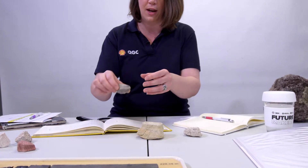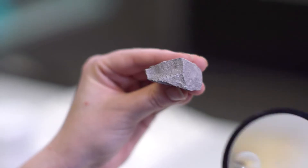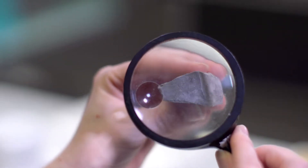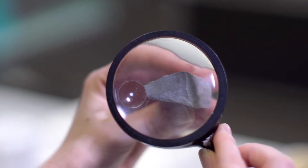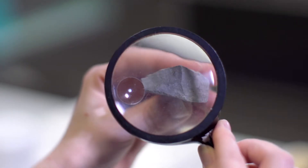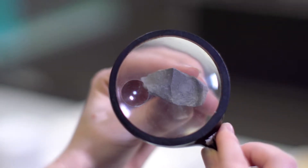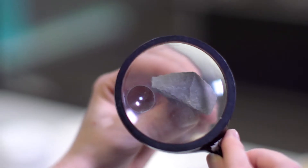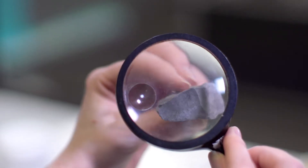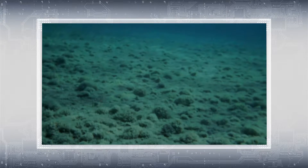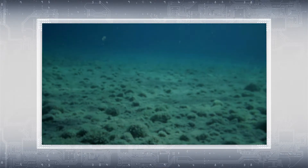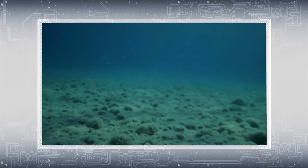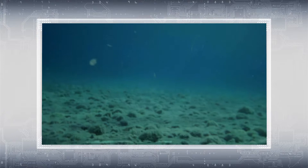Moving on to our last rock, I'm finding it really hard to actually see any individual grains. The fact that you can't see any individual grains suggests that it must have been deposited in a low-energy environment where only the very smallest particles are able to be transported. So this would have been a marine mudstone deposited in a relatively deep marine or even a deep lake setting.